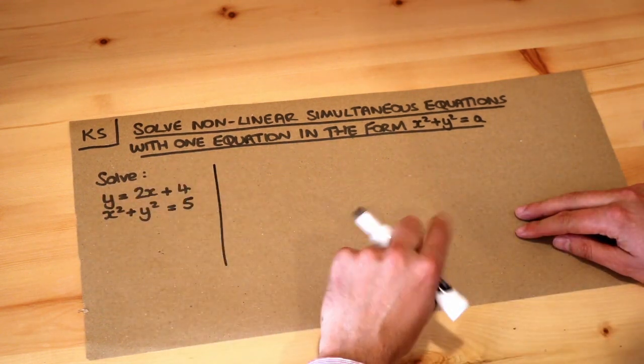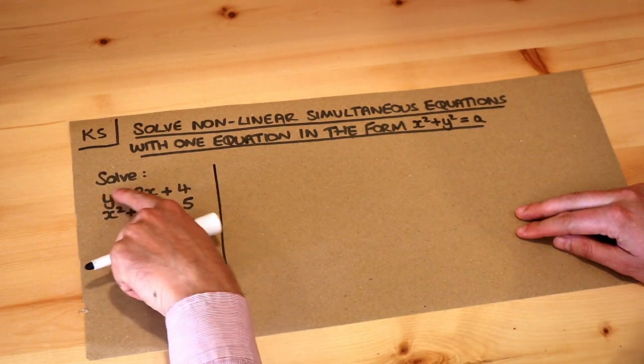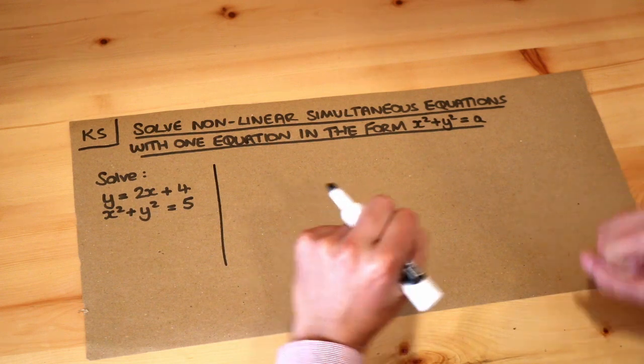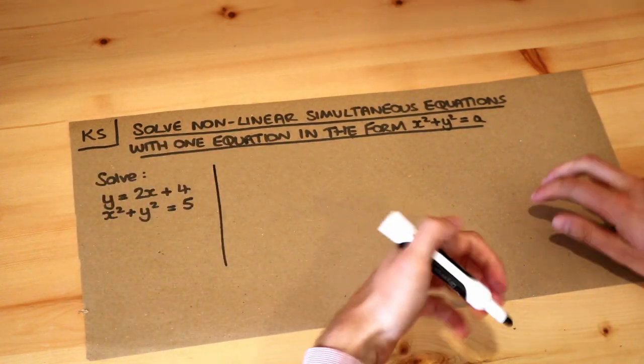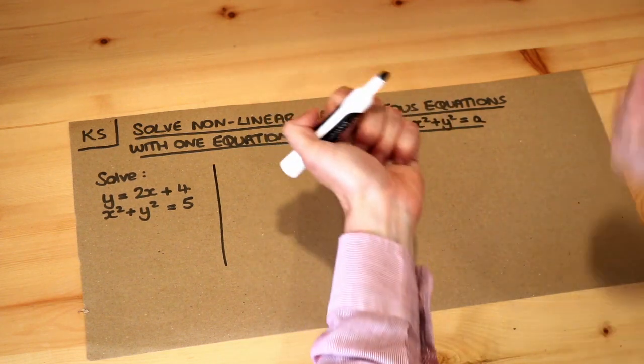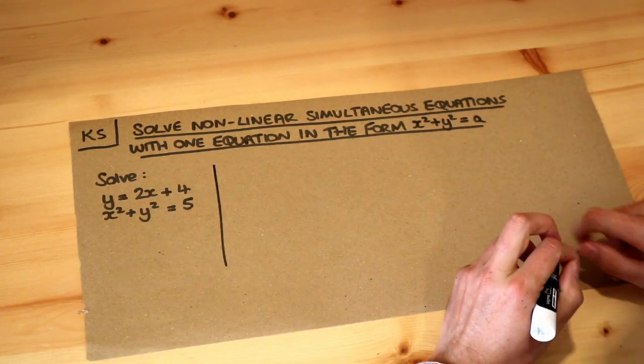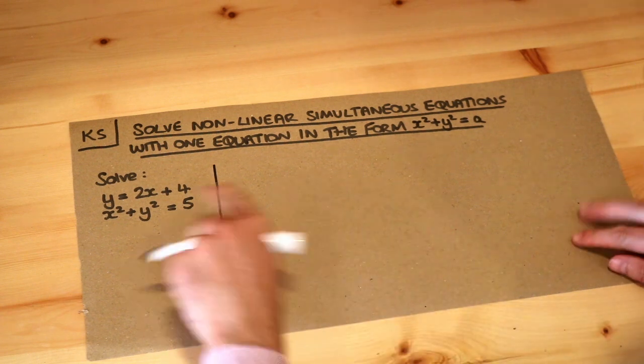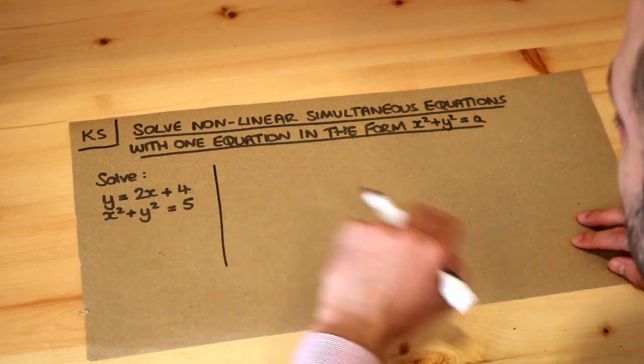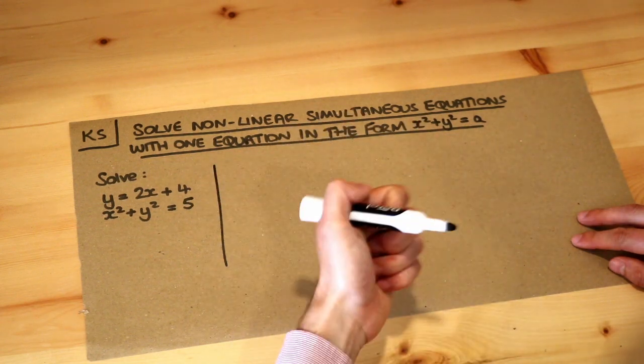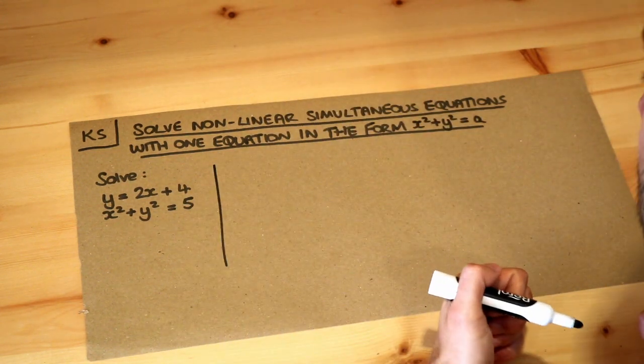These are simultaneous equations because we've got multiple equations with multiple variables x and y, and we need to find values of x and y which satisfy both equations. There might be more than one set of values that work, and typically when one equation is quadratic because it has squares in it, we're going to get two sets of solutions, so two pairs of x y values.